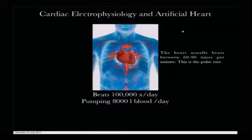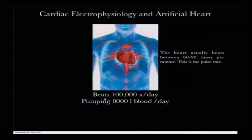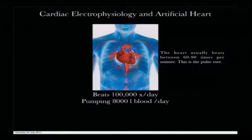Looking at cardiac electrophysiology and the artificial heart: a heart usually beats between sixty to ninety times per minute, which is essentially the pulse rate. Back-calculating, that means the heart beats around one hundred thousand times per day and pumps around eight thousand liters of blood a day. For a system to function this way for a whole lifetime, the efficiency of this machine is remarkable — it is not an easy task.